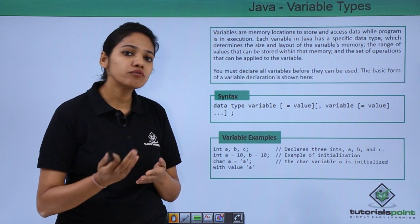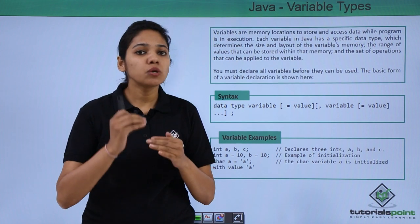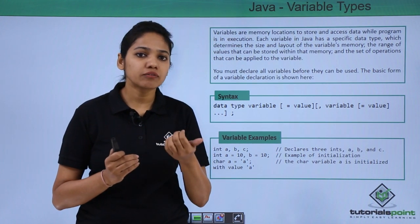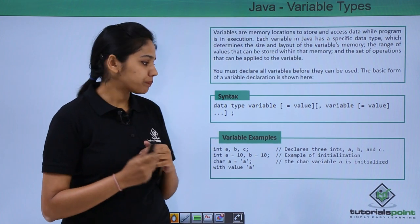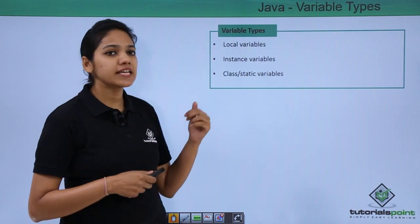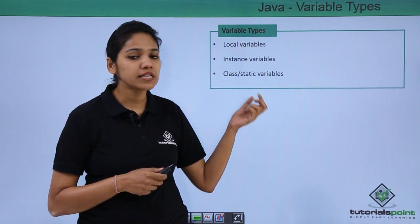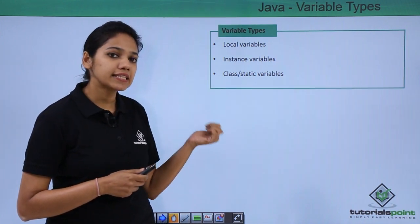We have certain types of variables which define where and what kind of variable you can define under each method or class. Let us see them. We have three kinds of variables: local, instance, and static variables.